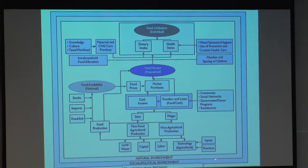Notice how many different determinants there are of food security. Food utilization and dietary intake are one determinant, but health status is another, water and sanitation is another, and childcare practices is another. We often think of nutrition as being about food, but actually a lot of these other things also come in and influence it. I want to go through a couple of ways that we measure some of these things and talk about the scale.